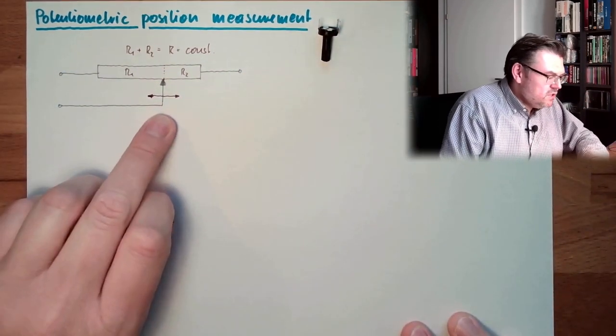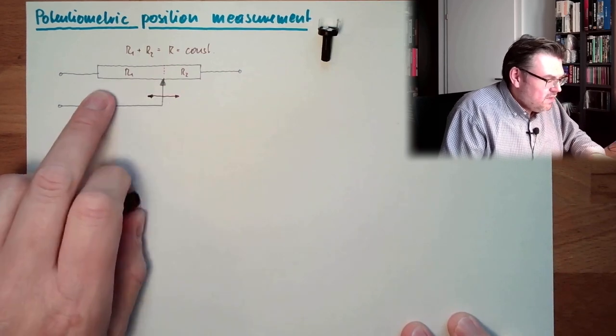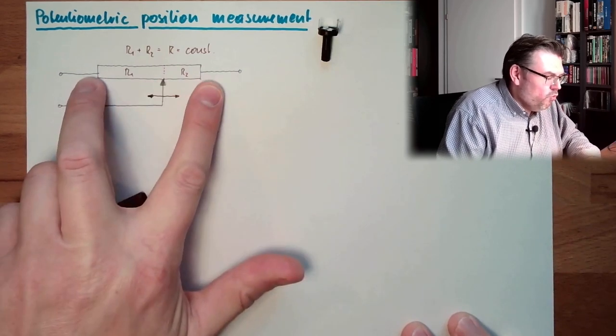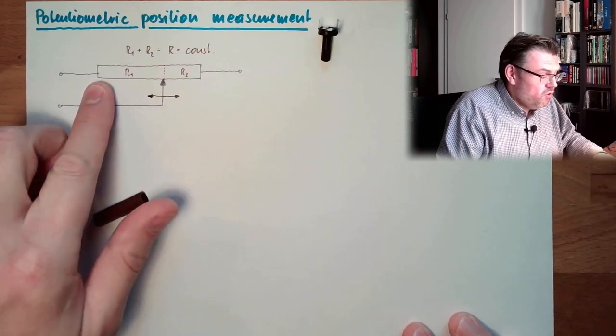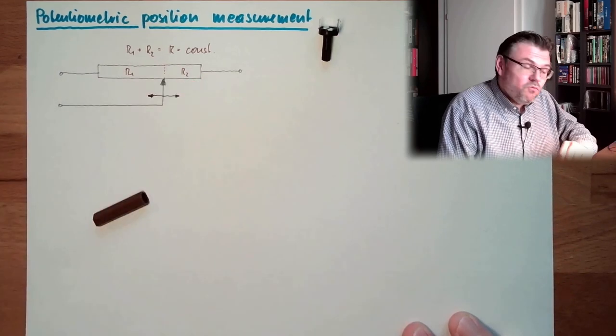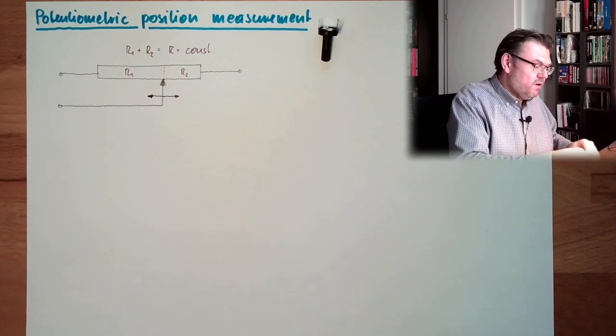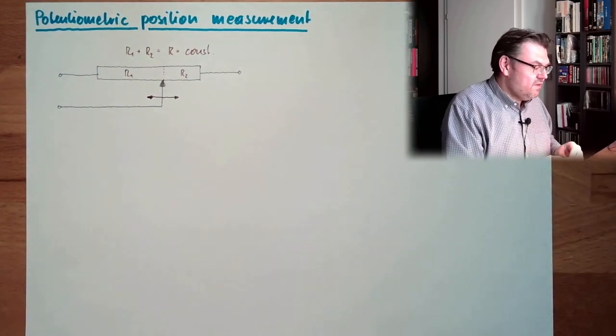And depending on the position of this, we can either, then R1 is either full resistance, we have seen this 10 kiloohms, or zero. And the other one is vice versa. So this is how this is working. This is exactly how this is working.